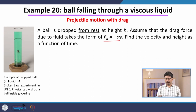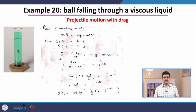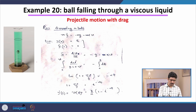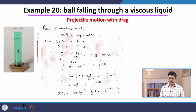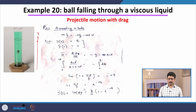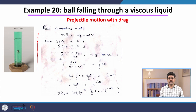The question is: find the velocity and height as a function of time. First, we take our coordinate system — the vertical direction is the y-axis, and this is a one-dimensional problem. We write down Newton's law for this problem. The forces acting on the ball: it has mass m, so the forces are weight mg downwards and the drag force.